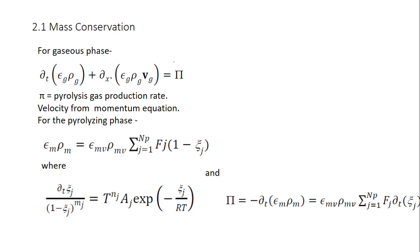For the governing equations, first I would like to talk about the mass conservation equation. On top you can see the mass conservation equation. On the right hand side, the equation contains a source term denoted by π, the pyrolysis gas production rate. This source term accounts for the rate at which gases are produced in the domain.